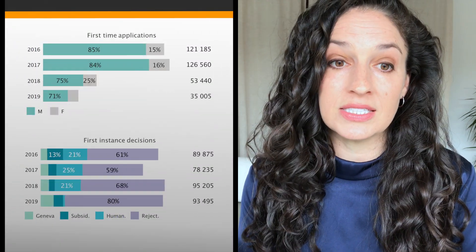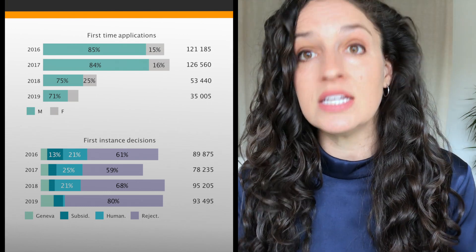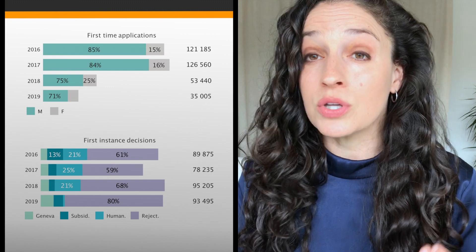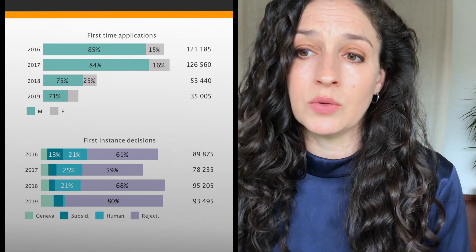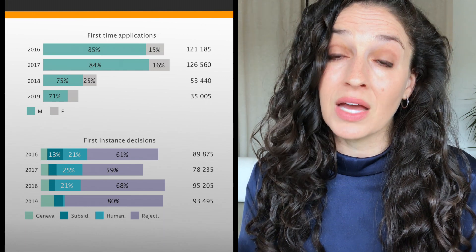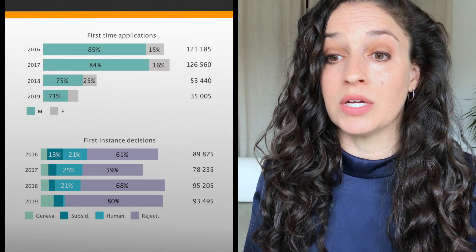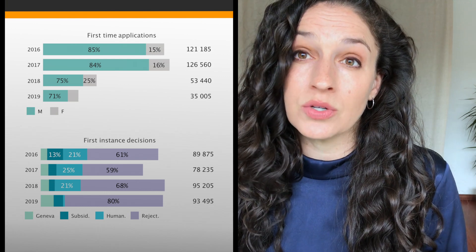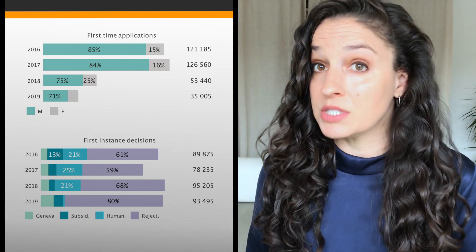Now let's turn to asylum seeking. Between 2016 and 2019, there were many more first-time asylum applications in 2016 and 2017 than in 2018 and 2019. The majority of asylum seekers during this period were men, with a much smaller proportion being women. Looking at first instance decisions, the majority of asylum claims were rejected — with 80% rejected in 2019. Between 2016 and 2018, refugee status under the Geneva Convention was granted to some, along with subsidiary protections and humanitarian grounds, but these numbers are much smaller.